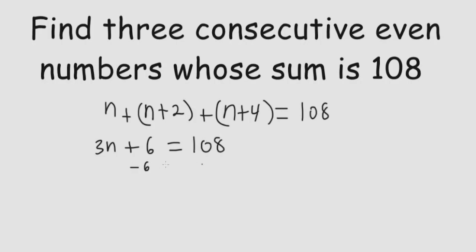We'll subtract 6 from both sides. We get that 3n is equal to 102. Divide both sides by 3, and we get that n is equal to 34.